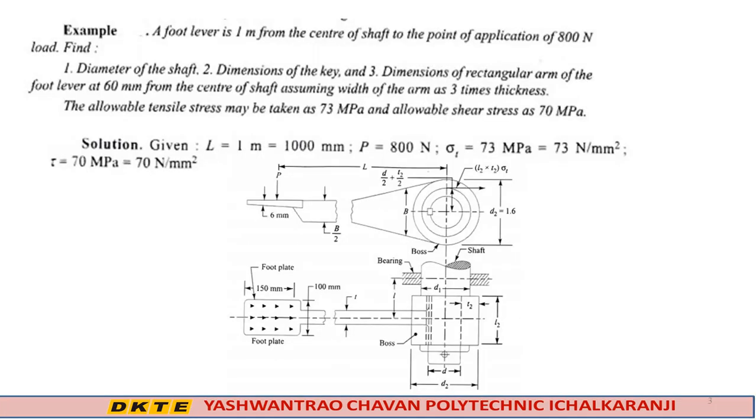One example is given here. A foot lever is 1 meter from the center of the shaft to the point of application of 800 Newton load.